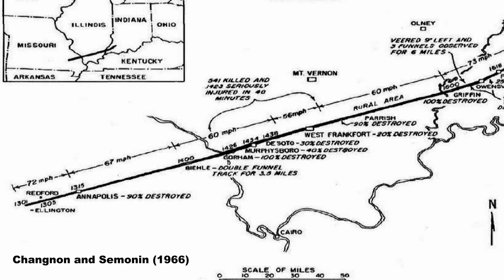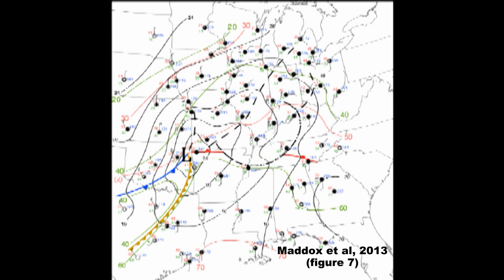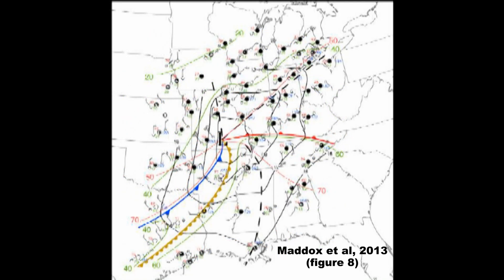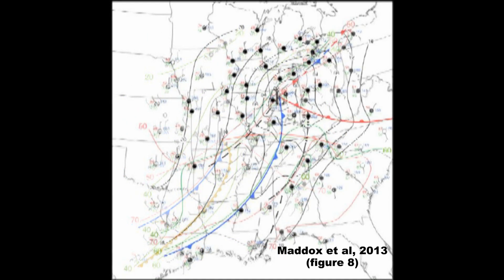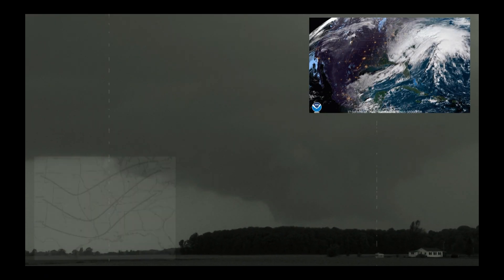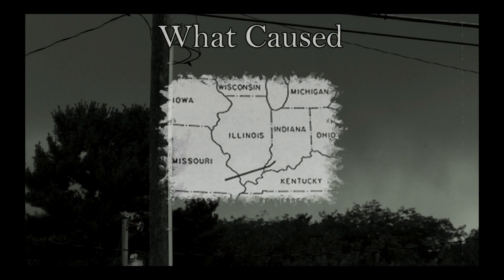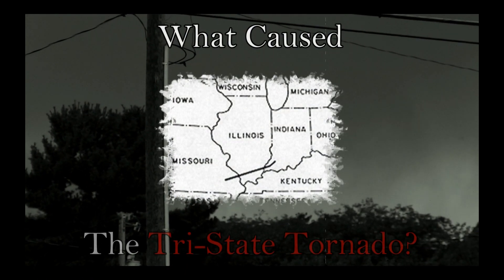Although extensive discussion has focused on the historical accounts of this monumental storm, less attention has been given to the specific meteorological characteristics which led to its formation. So in this video, we're going to dive into the factors supporting this catastrophic event and answer the question: What caused the Tri-State Tornado?